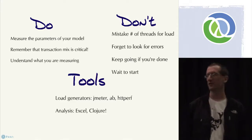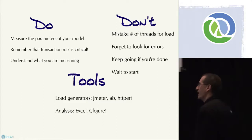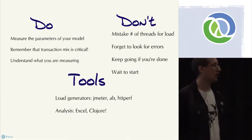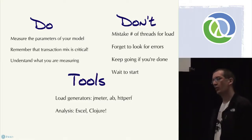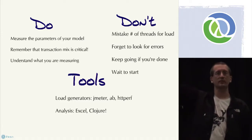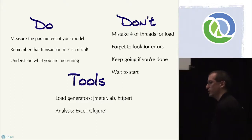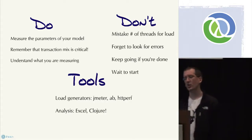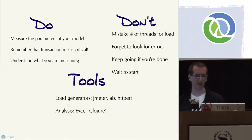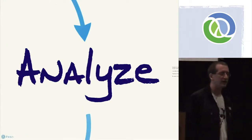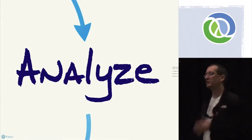Luke VanderHart, Stuart's co-author and a colleague of ours at Relevance, wrote a plugin to JMeter that lets you visualize results right in JMeter. JMeter is written in Java, and Clojure integrates well with that. Really, if you can produce a chart, that's all you need. So you've done your benchmarking and you're not done — now you do some analysis. There's something preventing your system from being fast. We want to find the single biggest factor in the performance of your system, ideally, and we want to do it empirically.